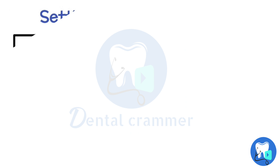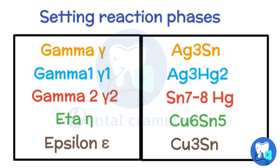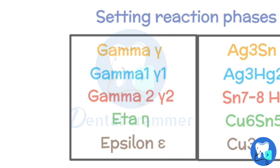In this video, we are going to discuss the setting reaction of dental amalgam. Let's first revise the setting reaction phases. Gamma is the silver and tin phase. Gamma 1 is the silver mercury phase, whereas gamma 2 is the tin and mercury phase. Eta and epsilon are copper and tin phases. Gamma is the strongest of all phases, whereas gamma 2 is the weakest.